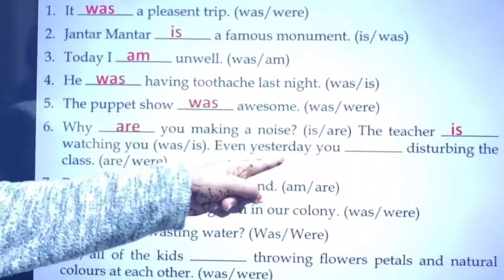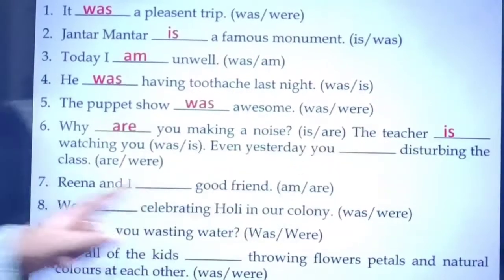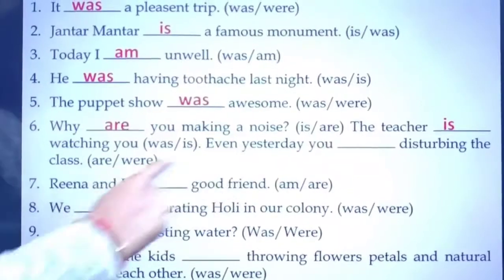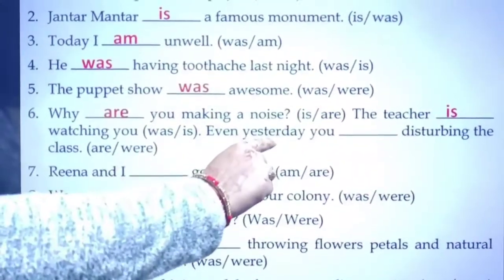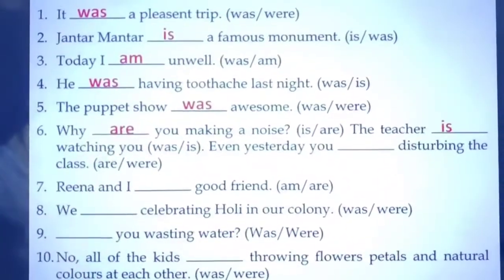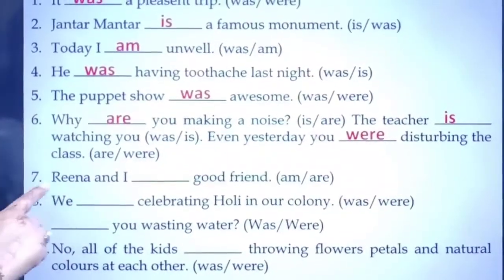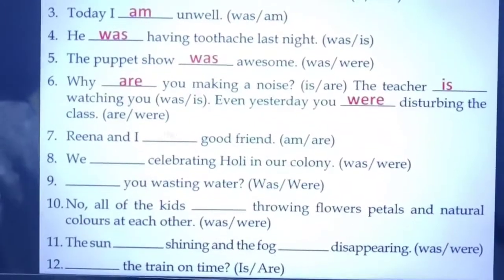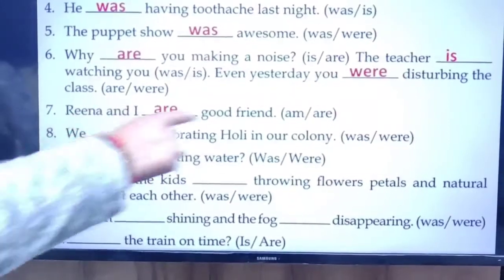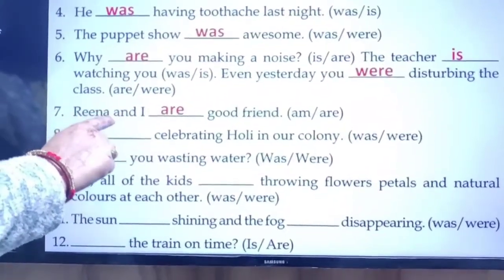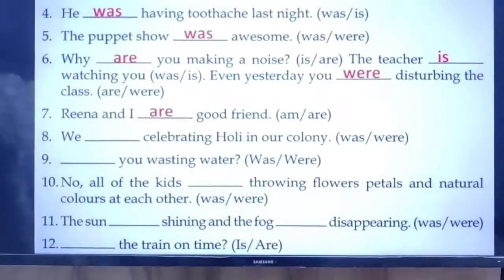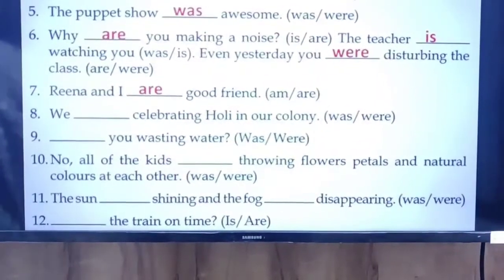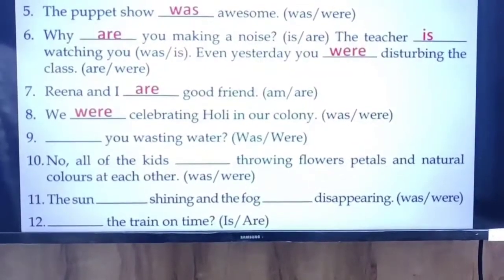Next: 'Even yesterday you ___ disturbing the class' — are or were? Yesterday means past form. Whenever the sentence is in past form and the subject is you, we always write were: even yesterday you were disturbing the class. Next: 'Rina and I ___ good friends' — am or are? Two persons at subject place, present form, so: Rina and I are good friends. Next: 'We ___ celebrating Holi in our colony' — was or were? We is plural, so: we were celebrating Holi in our colony.